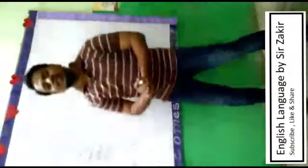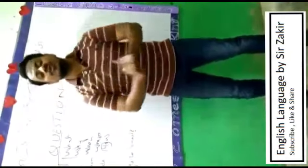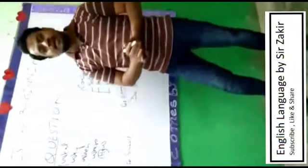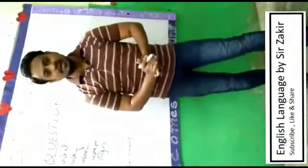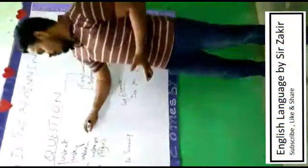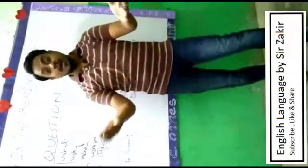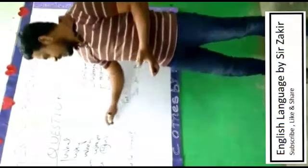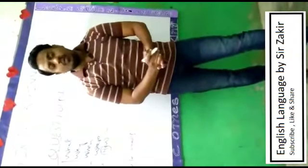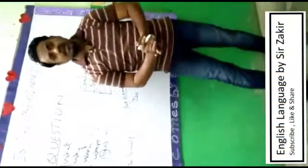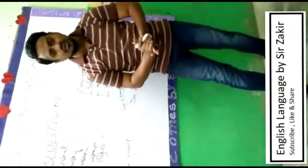In WH questions, we need to provide information in our answers. For example: 'What is your name?' — 'My name is Sagar.' 'Why do you learn English?' — 'English is very important.' 'When do you wake up?' — 'I wake up early in the morning.' 'Where do you live?' — 'I am living in Karachi.' 'How does Sagar teach?' — 'Sagar teaches very well.' So we need to give some information in the answer to WH questions.